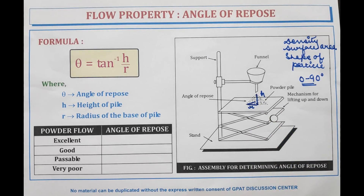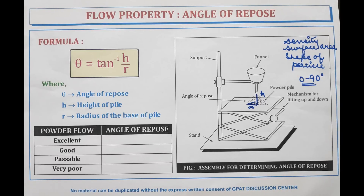The angle of repose method uses interparticulate friction, or resistance to movement between particles. There are three methods to determine the static angle of repose: first is the fixed height method, second is the fixed base diameter method, and third is the tilting box method. The dynamic angle of repose is measured by the revolving cylinder method.